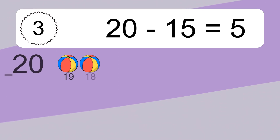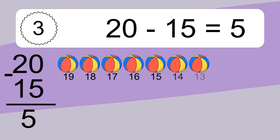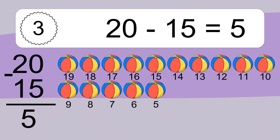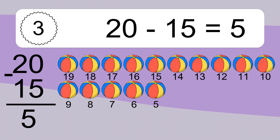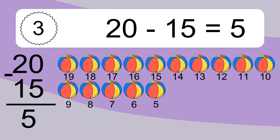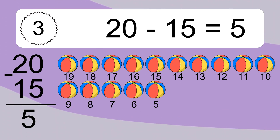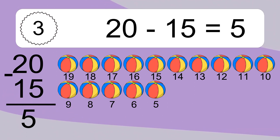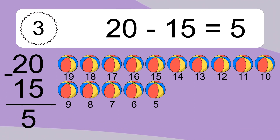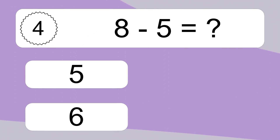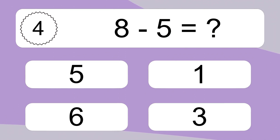20 minus 15 equals what? 20 minus 15 equals 5. Let's count it. 19, 18, 17, 16, 15, 14, 13, 12, 11, 10, 9, 8, 7, 6, 5.